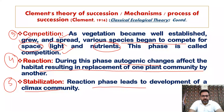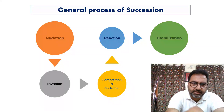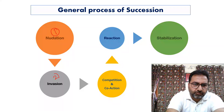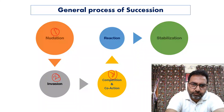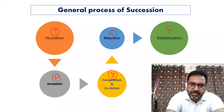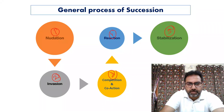In the graphical presentation, the first step is nudation, the second is invasion, the third is competition and co-action, the fourth is reaction, and the fifth is stabilization. All these steps together lead to and complete the ecological succession — the process of ecological succession.